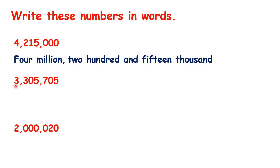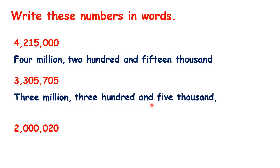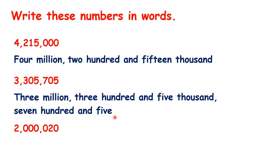Now for this second number, we have a three and then a comma, so that's three million. Then we have three hundred and five and another comma, so that's three hundred and five thousand. Then we have the rest of our number, so that's seven hundred and five.